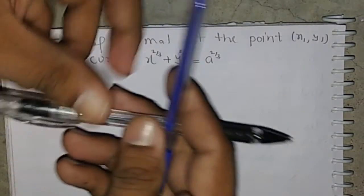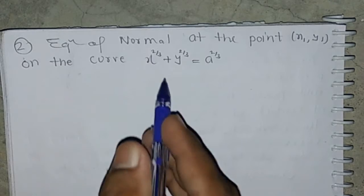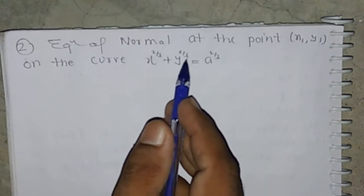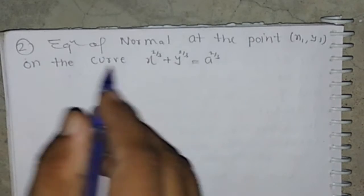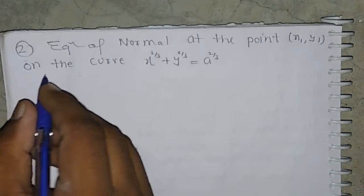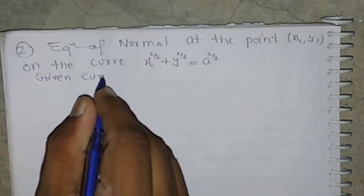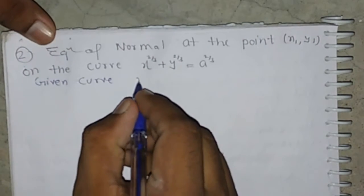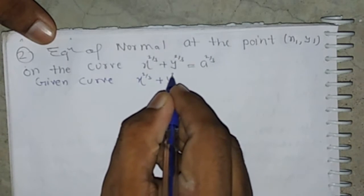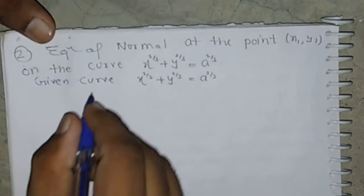We have to find the equation of the normal at the point (x1, y1) on the curve x^(2/3) + y^(2/3) = a^(2/3). Firstly, we differentiate the given curve: x^(2/3) + y^(2/3) = a^(2/3).